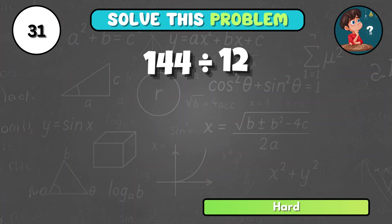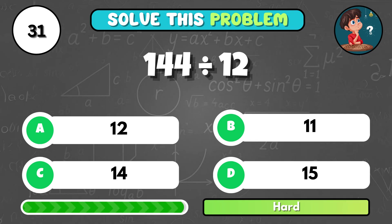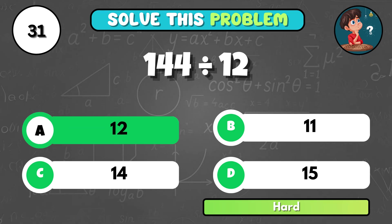What do you get when 144 is divided by 12? It's A, 12.